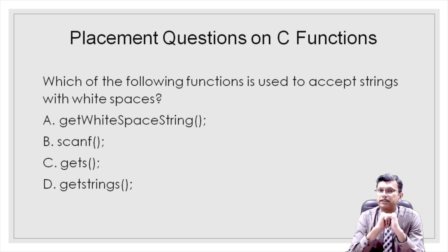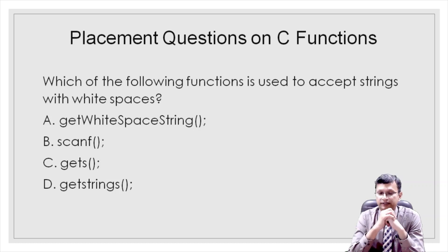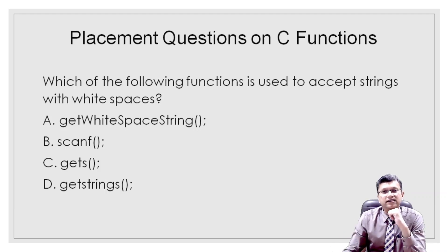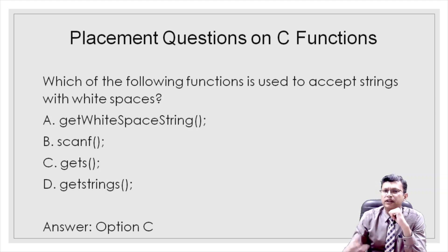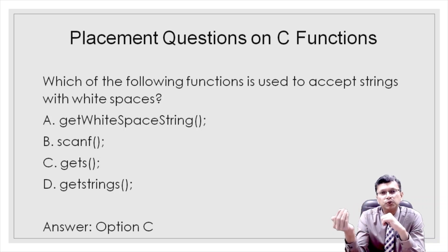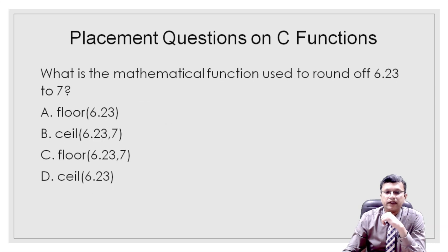Question three: which function is used to accept a string with white spaces? The options are get_white_spaces_string, scanf, gets, or get_strings. The answer is option c — `gets`. The `gets` function is a string function that scans white spaces as well, so we can use `gets` to read strings including blank spaces.